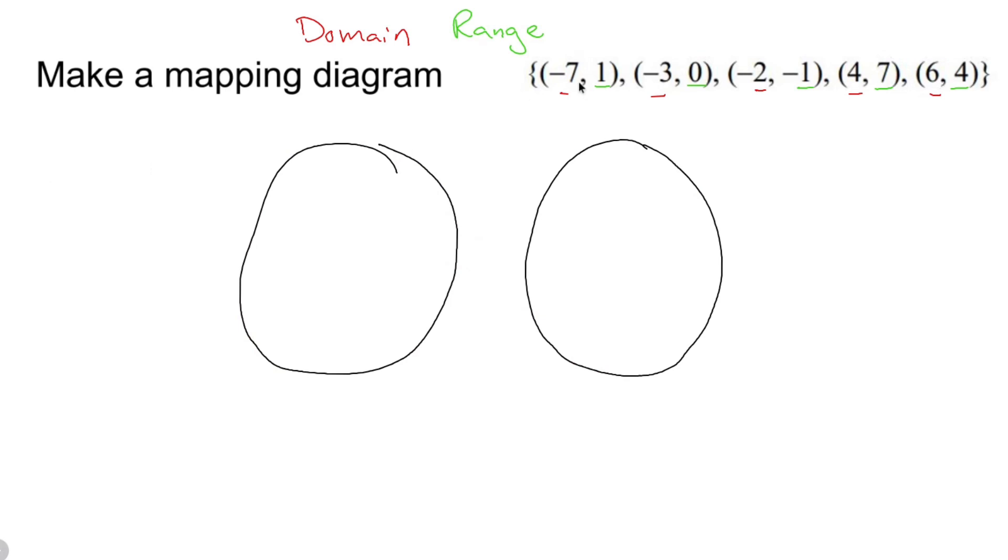You take the numbers in the domain and you list them in order. It looks like this is already listed in order, so life is good. Negative seven, negative three, negative two, four, and six.